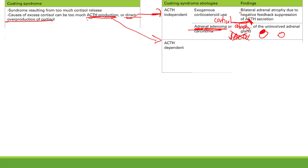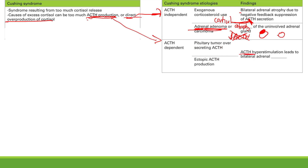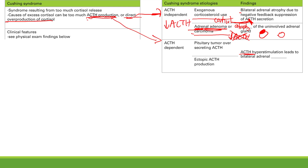For ACTH-dependent Cushing, causes include a pituitary tumor — the anterior pituitary makes too much ACTH — and ectopic ACTH production, such as small cell lung cancer, which makes too much ACTH. With too much ACTH stimulating the adrenal glands, you get hyperplasia. So to summarize: exogenous corticosteroid use and adrenal adenoma have decreased ACTH levels, while pituitary tumor and ectopic ACTH sources have increased ACTH levels.